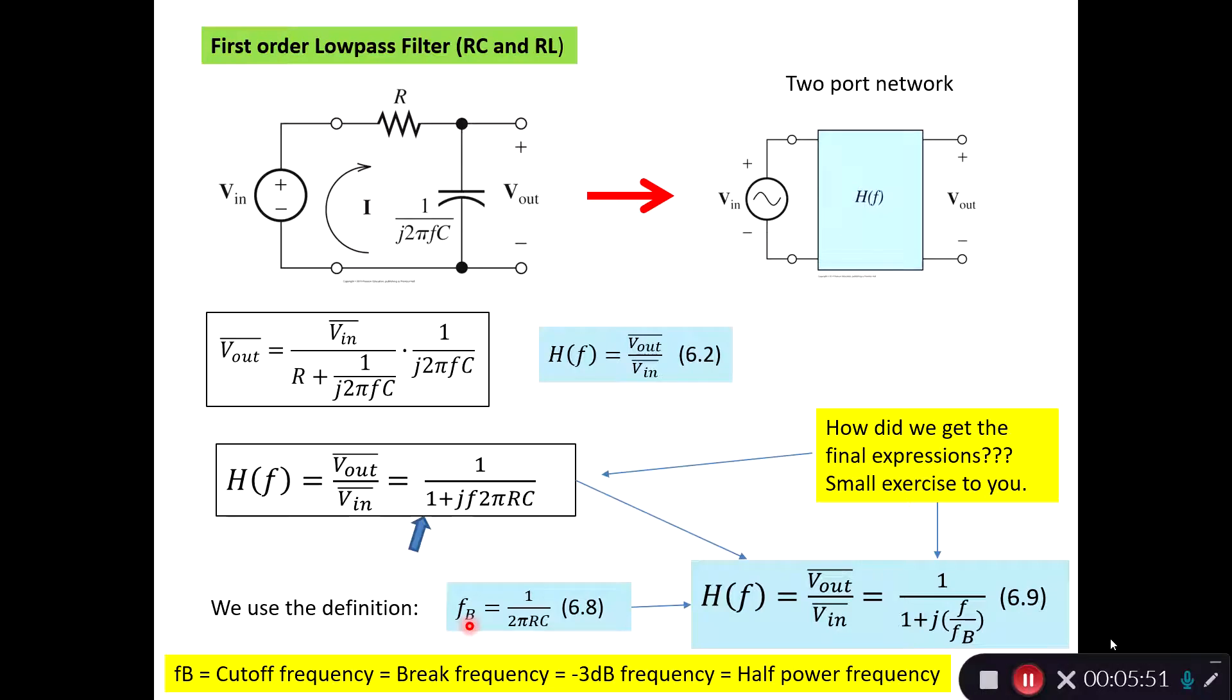Then we use the definition that the breakpoint frequency is 1 over 2π times RC. FB is also called the cutoff frequency, the break frequency, the -3dB frequency, or the half power frequency. A dear child has many names. If we use this one, we can see that we actually have 2πRC in here and we have jF up here. By applying this definition, we can rewrite this one to this equation. This is our transfer function normalized to the FB, the break frequency or the cutoff frequency equation.